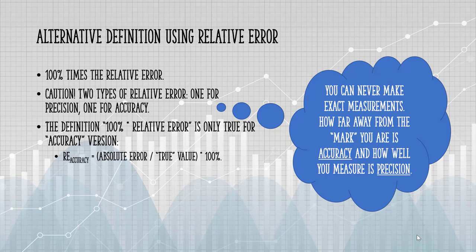In that case, you can use the formula: relative accuracy equals absolute error divided by the true value times 100%. That definition doesn't work if you are using the relative error for precision.